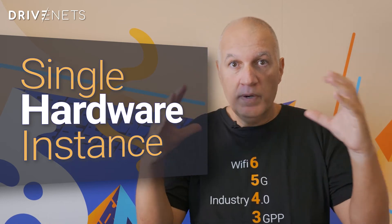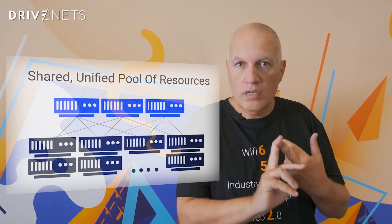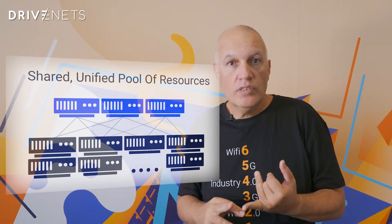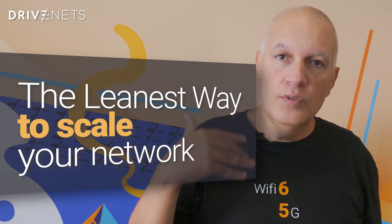And number three, clusters. Taking multiple white boxes and grouping them together, then abstracting them towards the application layer means you can have any size of network or any size of site with multiple boxes that looks like a single hardware instance. Those multiple boxes are grouped together into a shared unified pool of resources — compute, CPU resources, networking, forwarding resources, TCAM, memory resources, et cetera. Everything is blended together into a single pool of resources. Using clusters and a shared pool of resources means the leanest way to scale your network — you can upgrade your network while still achieving the best utilization of your hardware resources.